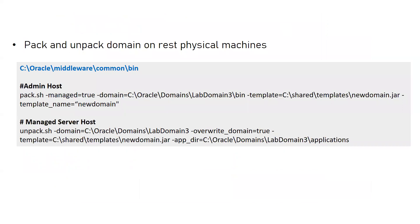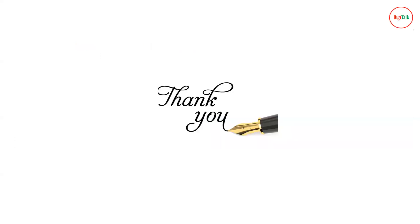If you want to pack and unpack your domain to the rest of the physical machines — for example, if you have horizontal clustering with multiple servers — go to your primary machine where the Admin Server is running, and run the pack command to create a new JAR file for the new domain. Copy this JAR file to all physical servers. On each server, take a backup or move the existing domain, then create a new domain using the unpack command. Specify the new domain location, override_domain=true, the template location from the pack command, and the application directory. Once done, start your Managed Servers. This is the simple method of moving your domain from one location to a different location.